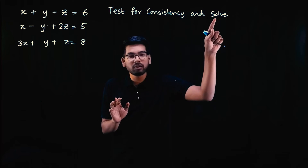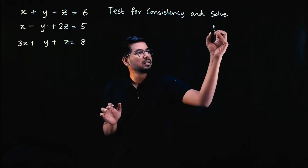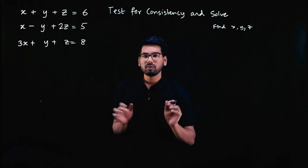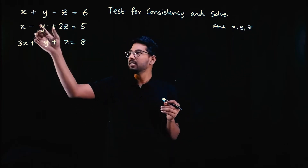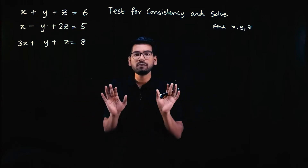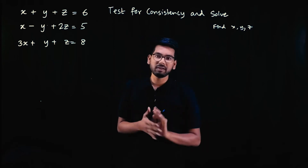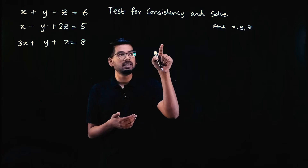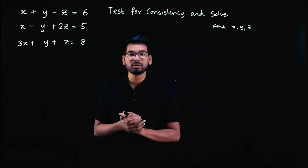So what does 'solve system of equations' mean? It means find X, Y, Z values. We need to find X, Y, Z values that satisfy all these equations. In the question, it says: test for consistency and solve. So consistency — everybody uses this term in mathematics.